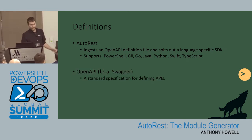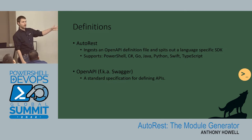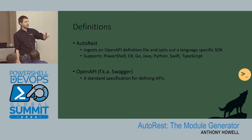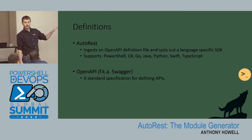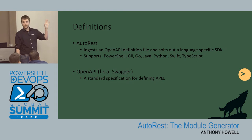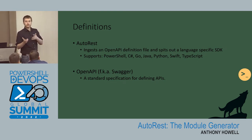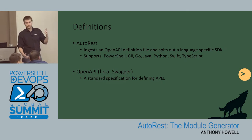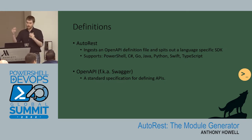An OpenAPI spec — I kind of mentioned this — it used to be called Swagger. In v2 it's called Swagger. My company's API generates a v2 definitions file, so I'll be saying Swagger a lot, just because that's what we use. But v3 is OpenAPI. I don't know all the differences between v2 and v3, but a lot of the concepts will translate from one to the other.